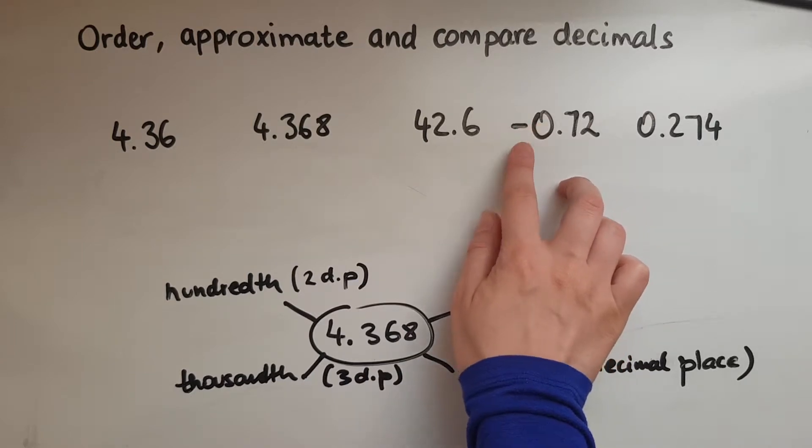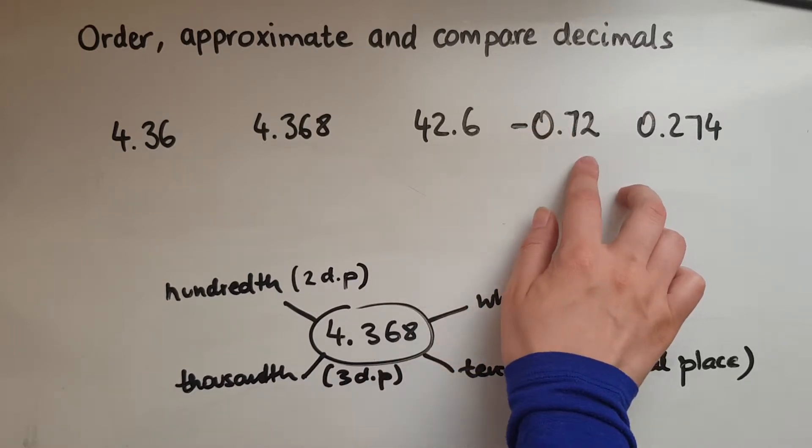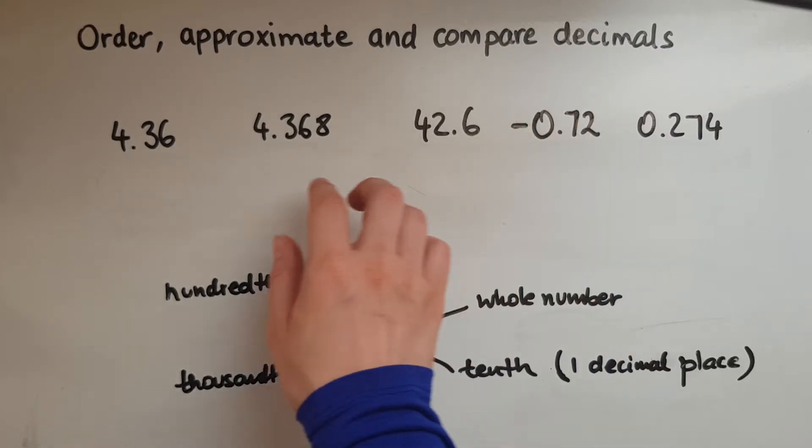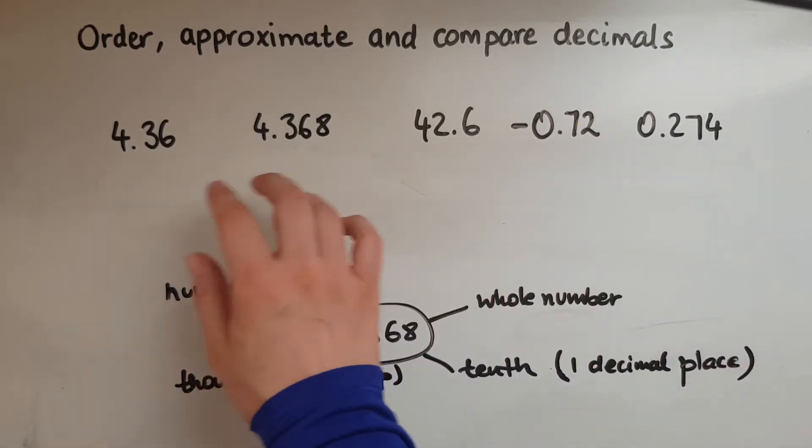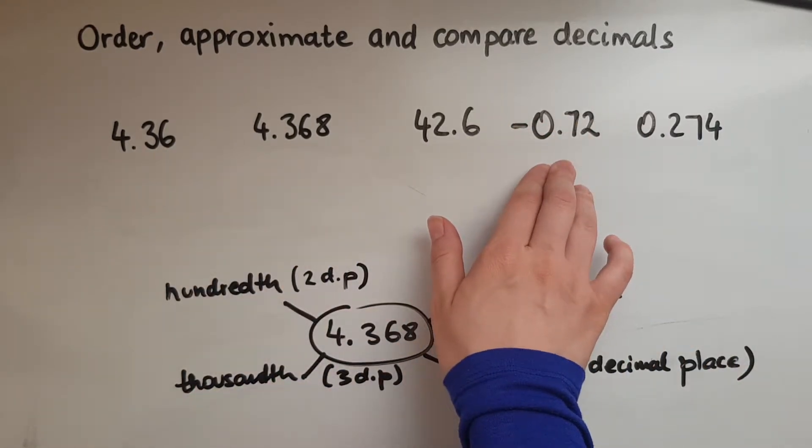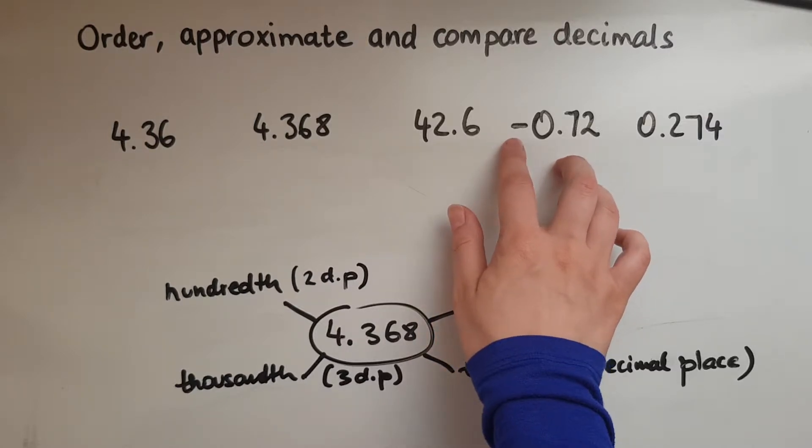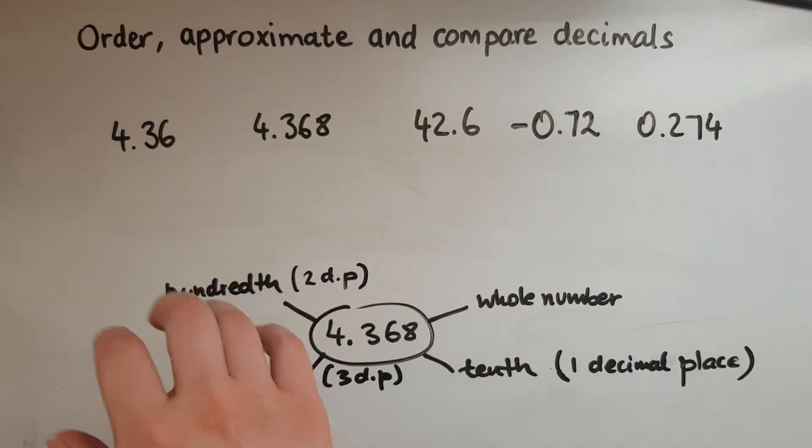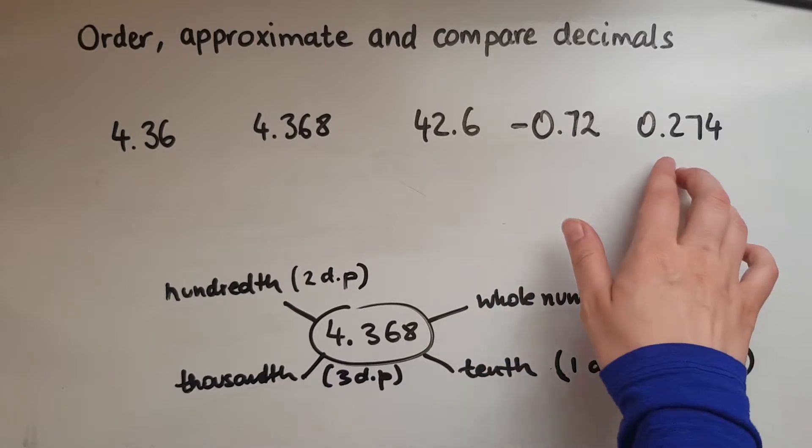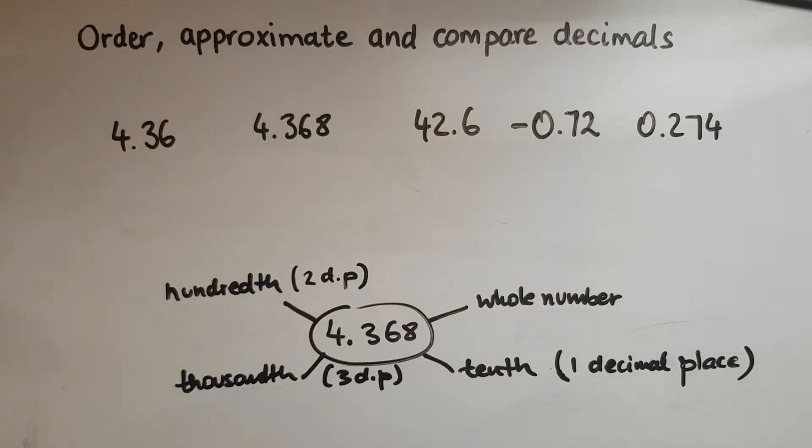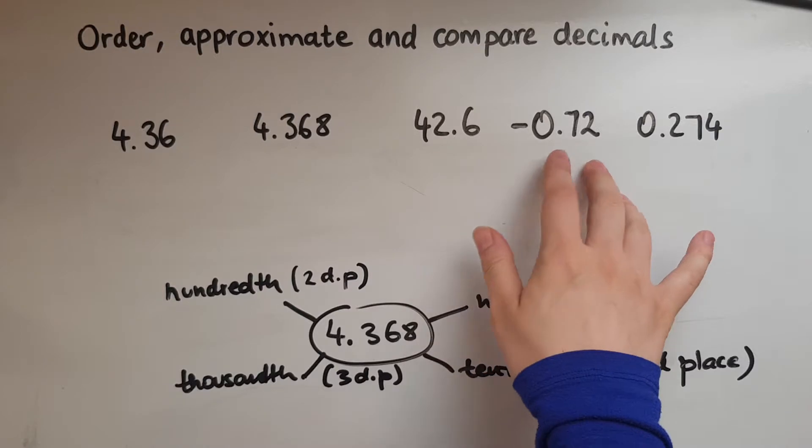This is minus or negative 0.72, so this is much smaller than any of the positive numbers we have here, because if it has a negative it means it's a smaller number, and we've looked at that in thermometers or number lines.